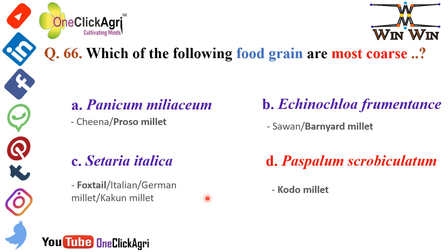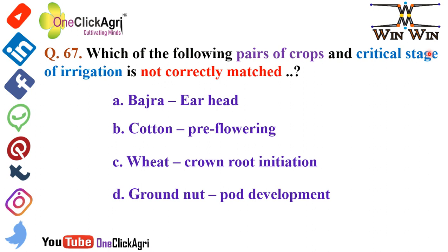Question 67: Which crop-critical stage of irrigation pair is not correctly matched? Bajra-ear head initiation is correctly matched; cotton-preflowering is correctly matched; wheat-crown root initiation is correctly matched. Groundnut-pod development is the incorrect pair — peg formation is the critical stage of irrigation in groundnut. Please remember this; it was also discussed in a previous lecture.